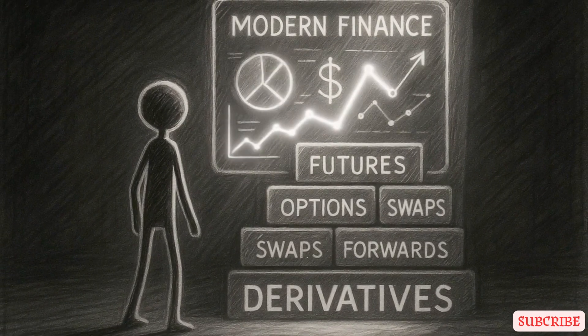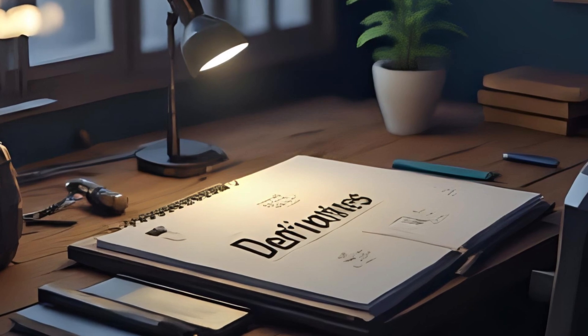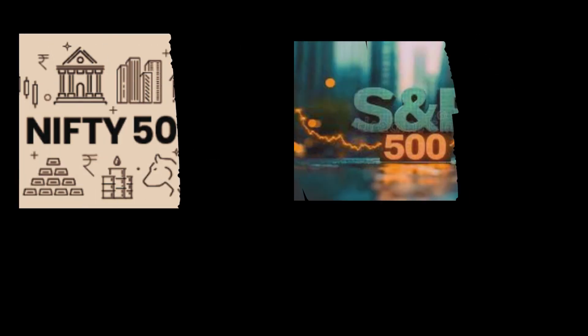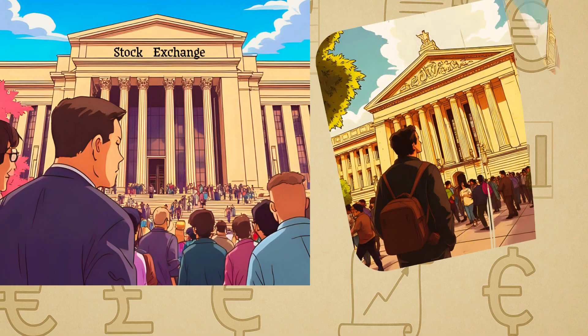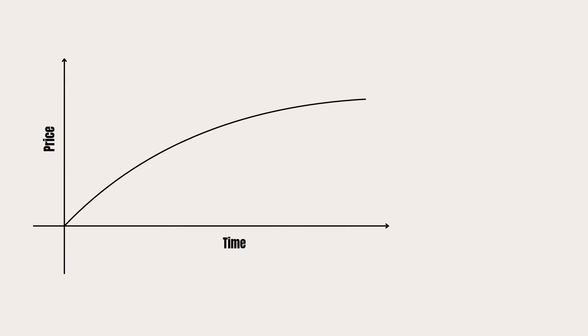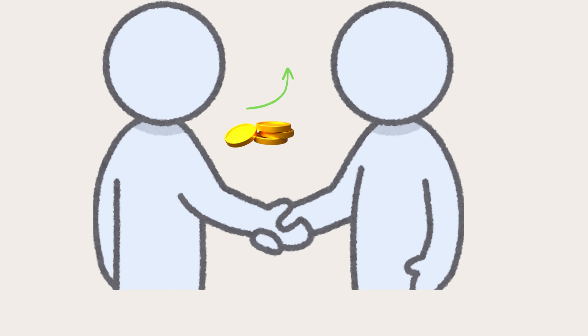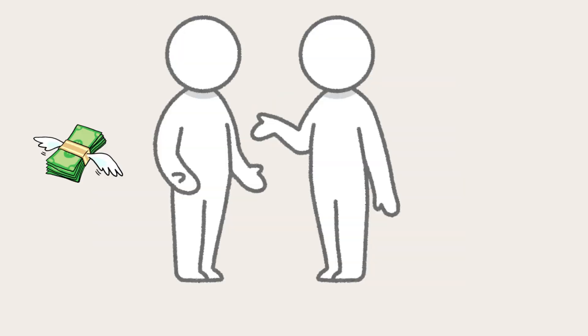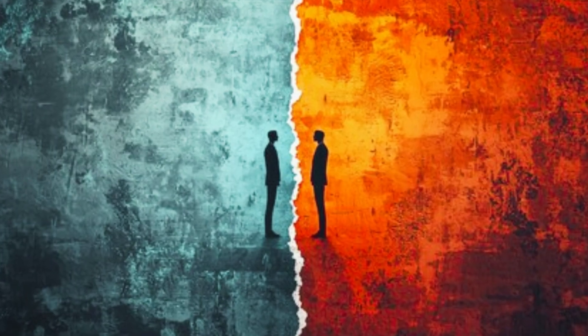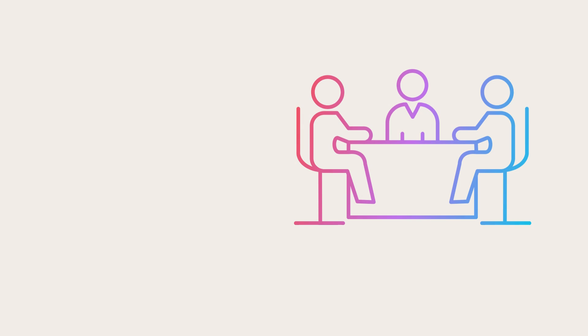A derivative is a financial contract whose value is derived from an underlying asset. That asset could be a stock, a commodity like gold or oil, a currency, an interest rate, or even an index like the NIFTY or S&P 500. You're not directly buying the asset. Instead, you're trading on how its price will move in the future. Imagine you bet with a friend that the price of gold will go up next month — if it does, you win money; if it doesn't, you lose. You never owned gold, but you profited or lost based on its price. That's the essence of a derivative: making financial bets on future prices, with contracts.